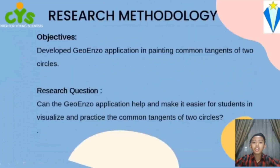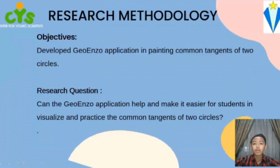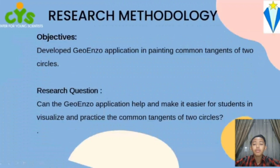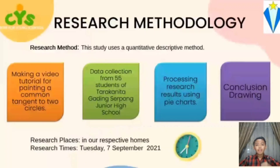Research Methodology: The objective of this research is to develop geo-enzoification in painting common tension of two circles. The research question is: can the geo-enzoification help and make it easier for students in visualizing and practicing the common tension of two circles?